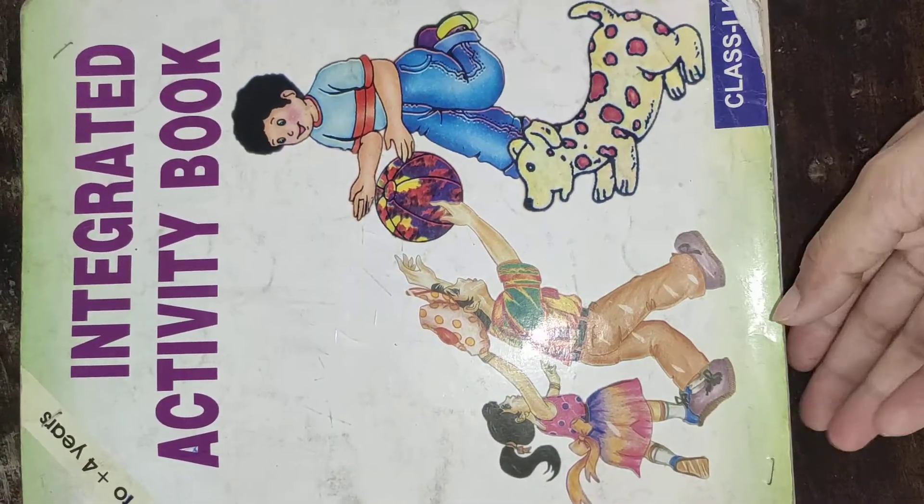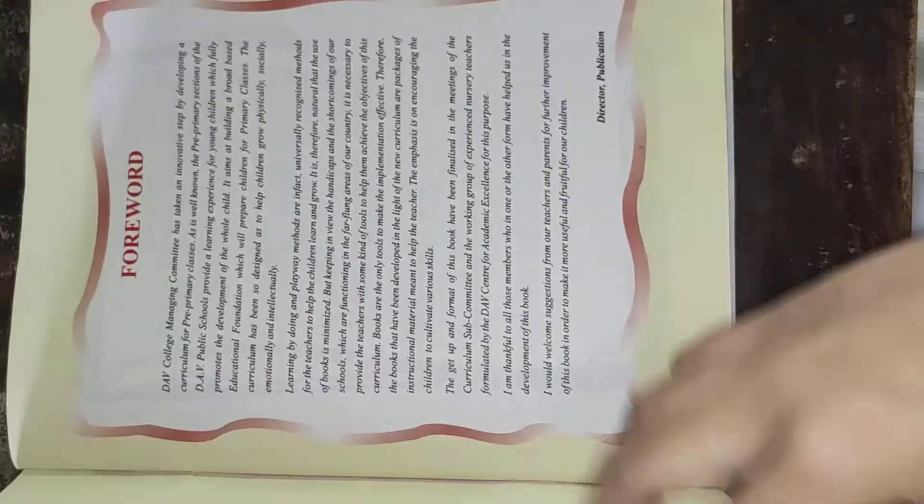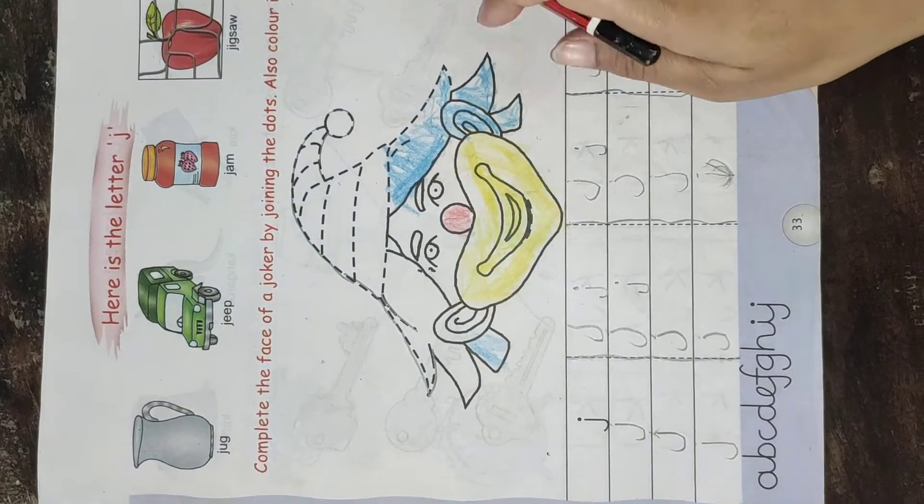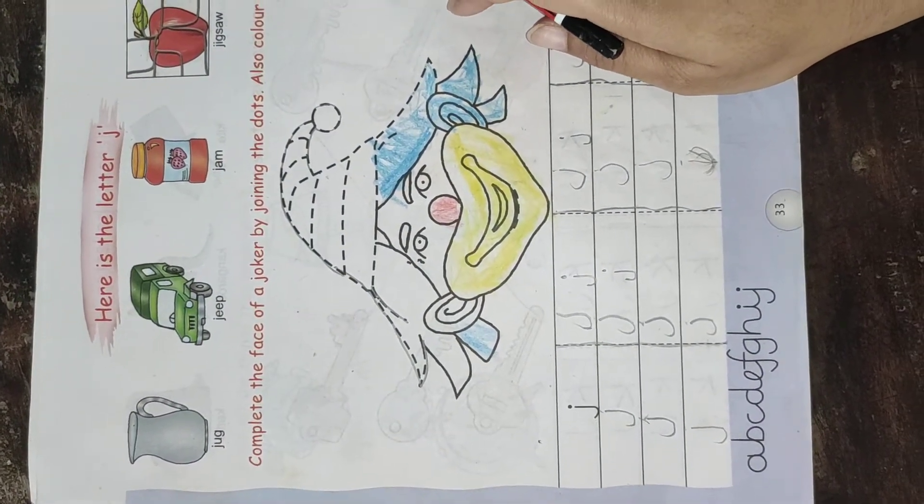So first of all, open your integrated activity book and go to page number 33. This one. Okay children, let's see what is here.